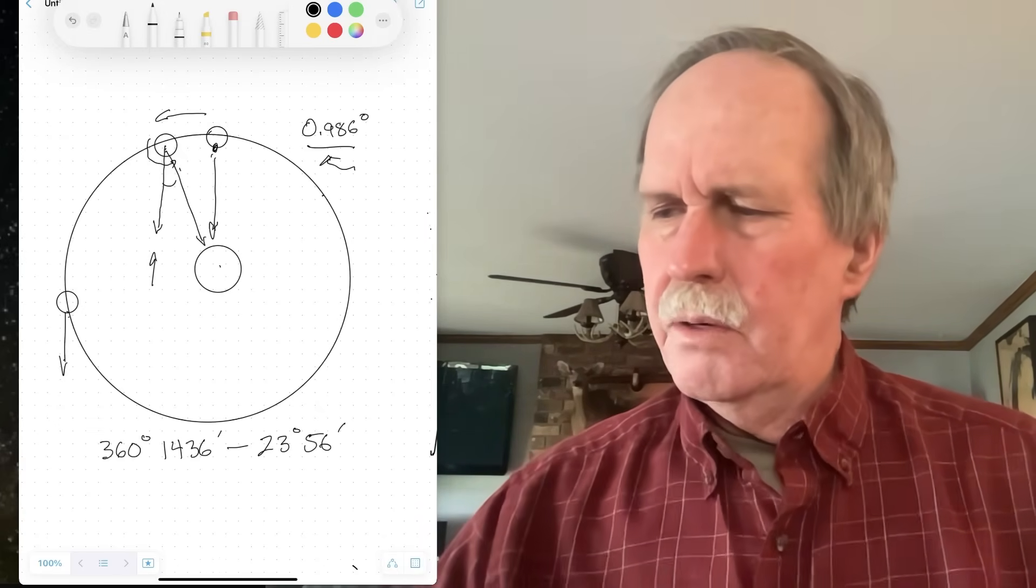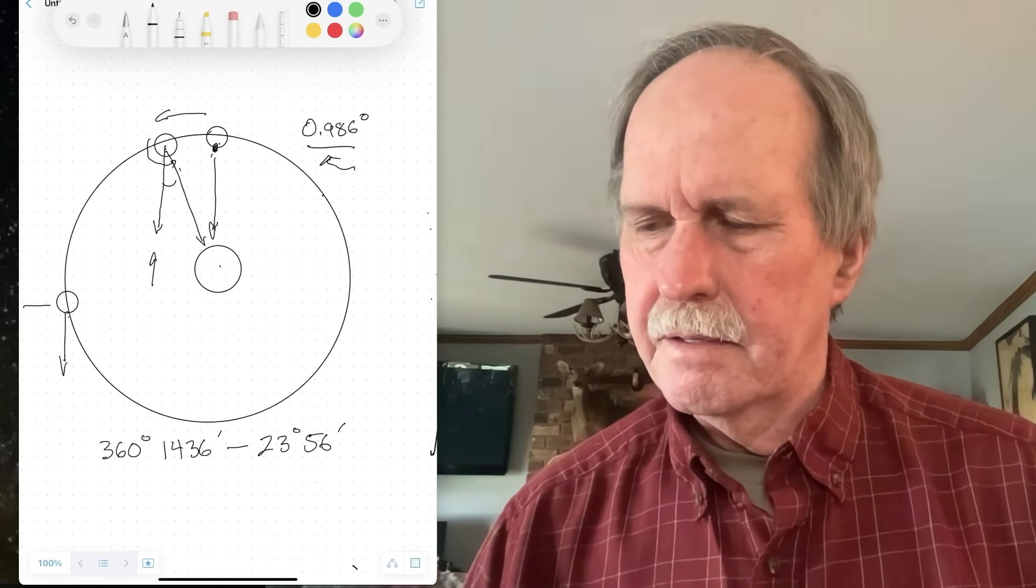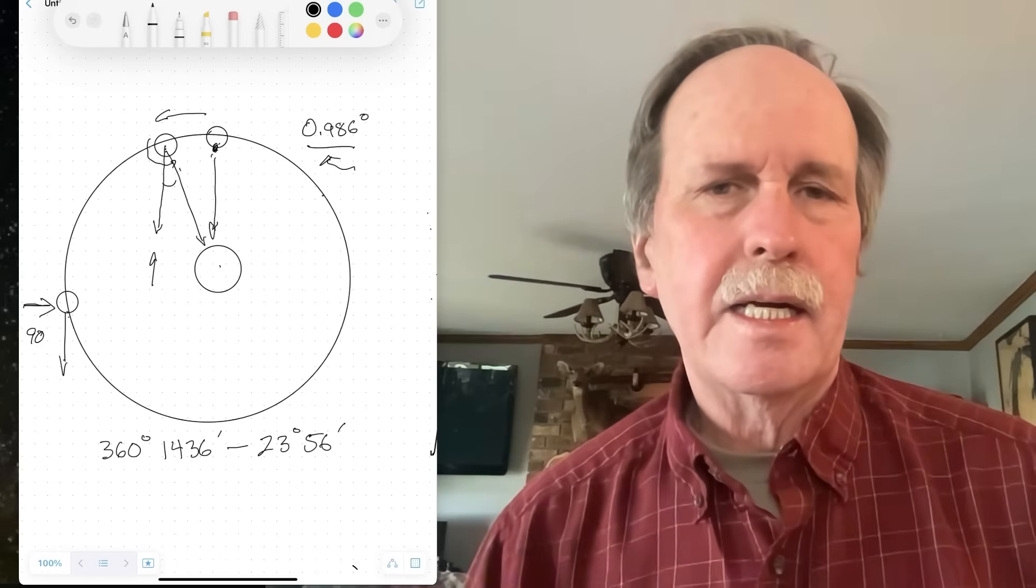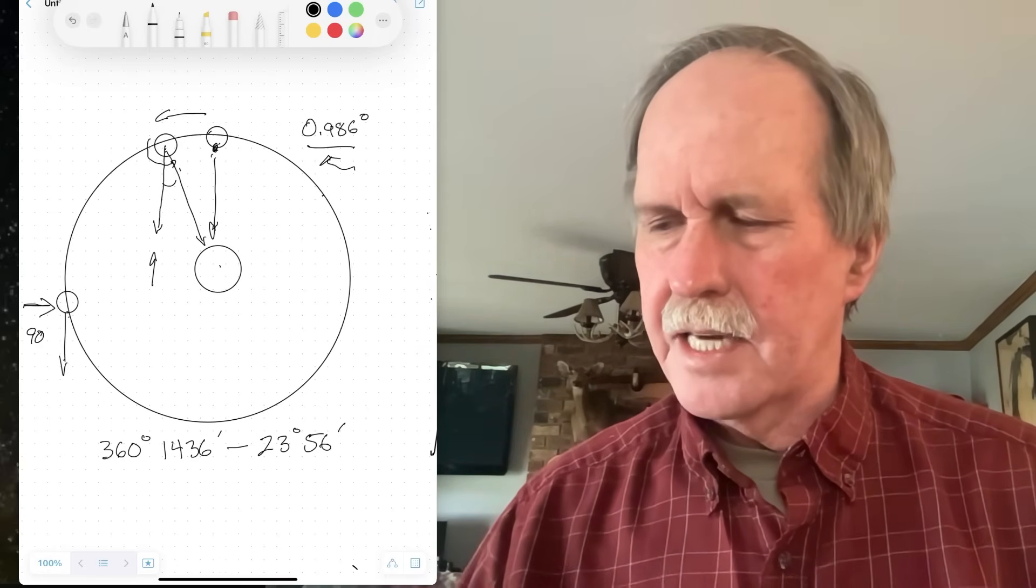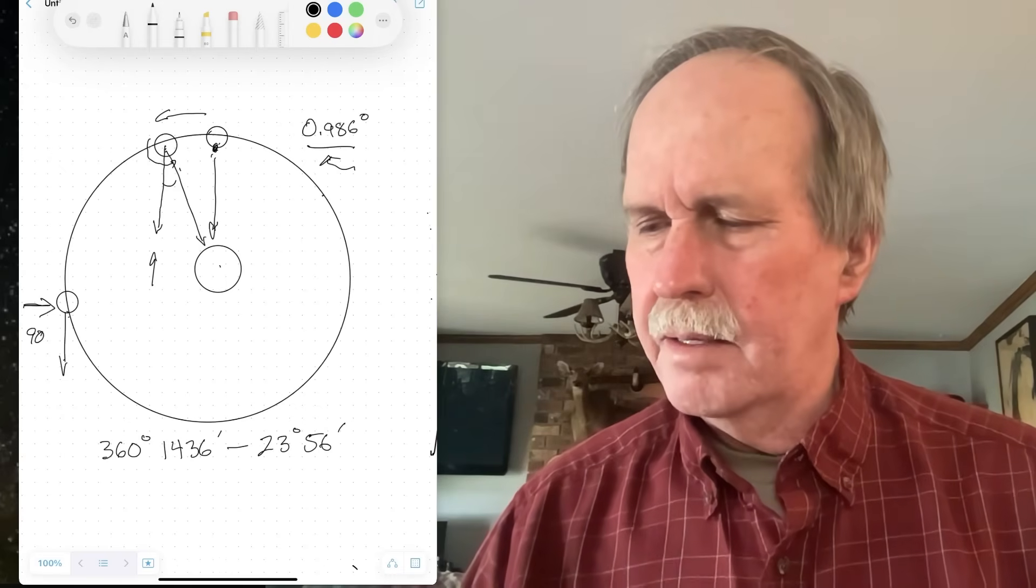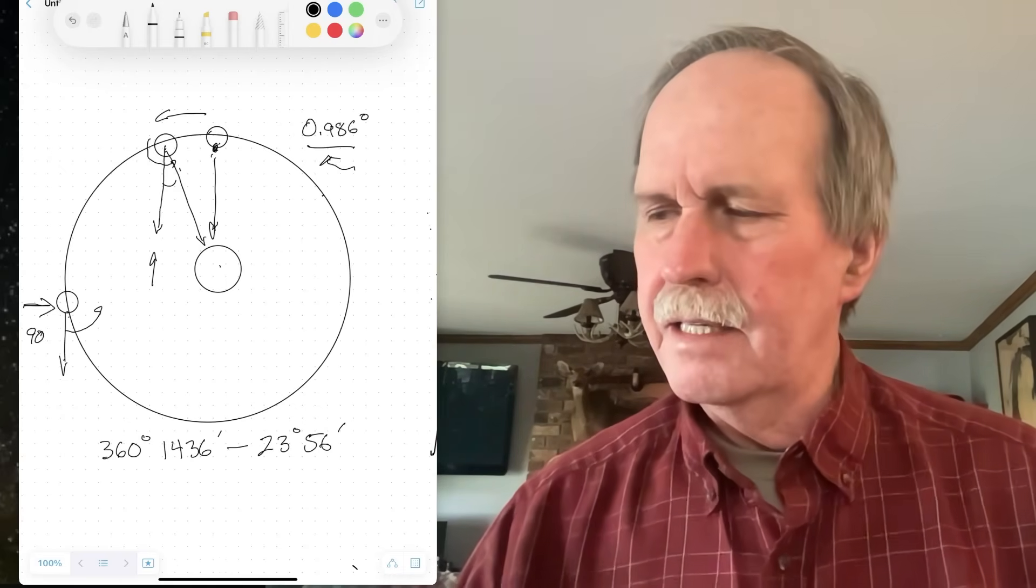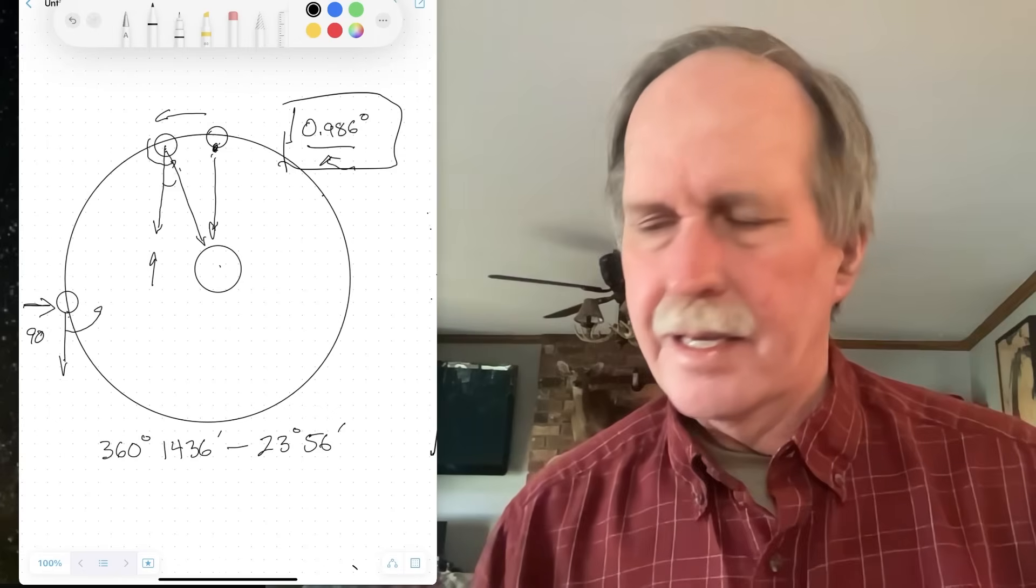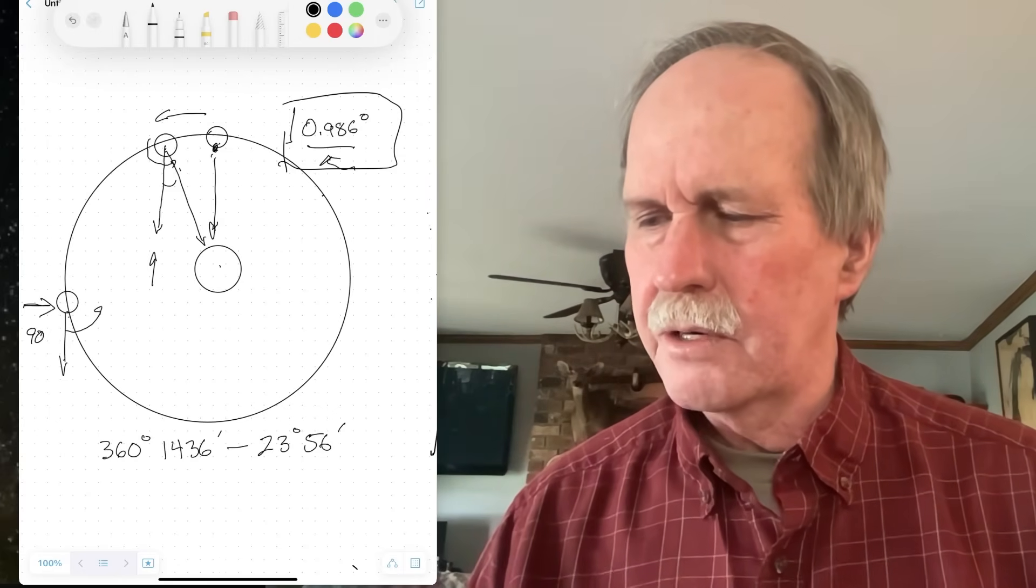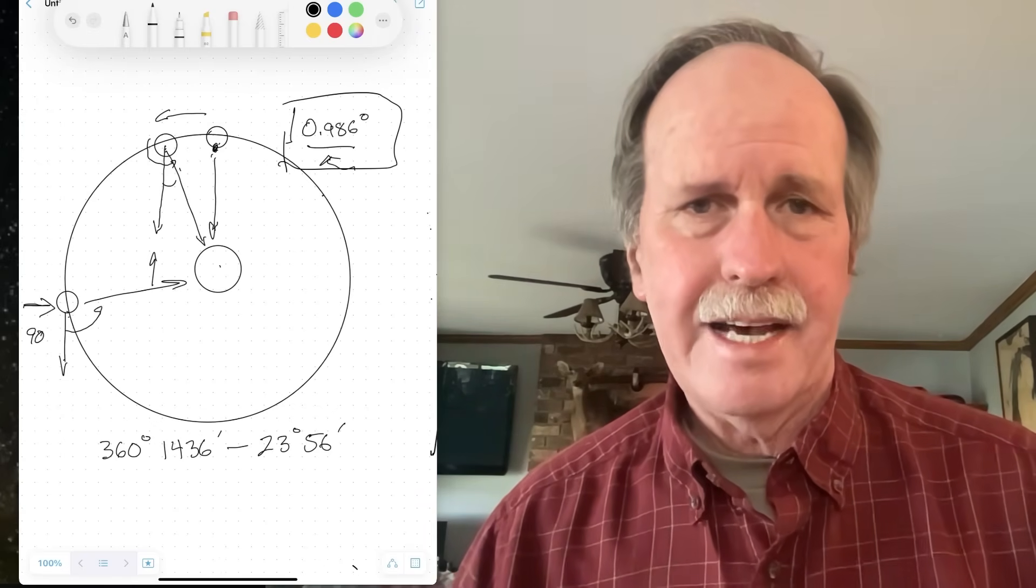So, when you look at the Earth in this position, it's in this position approximately 90 days later. So at the end of those 90 days, it has not only rotated every day, but it's also rotated back in that direction 90 times 0.986 degrees. In other words, approximately 90 degrees, and as a result, solar noon is now pointing in that direction.